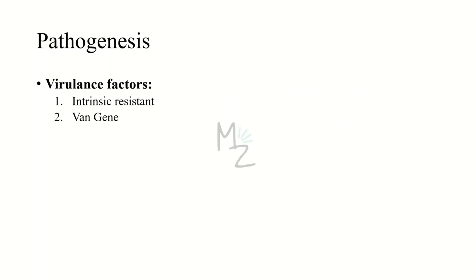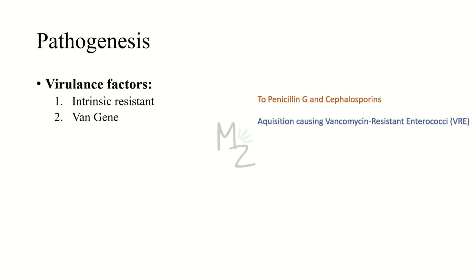Pathogenesis — we'll talk about virulence factors. The first is intrinsic resistance to penicillin G and cephalosporins; enterococcus cannot be treated with these. The second high-yield virulence factor is the van gene — the vancomycin resistance gene. Enterococcus acquires this gene and becomes vancomycin resistant enterococci, or VRE.